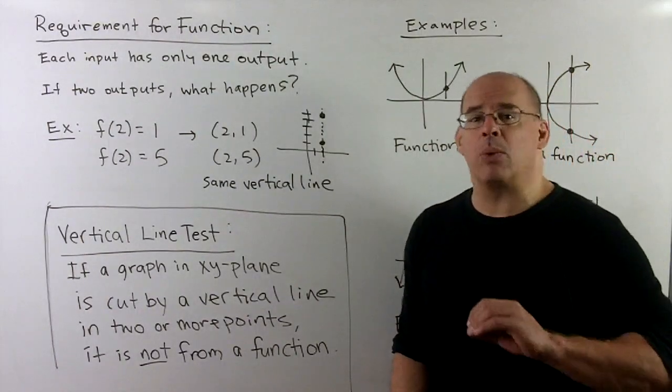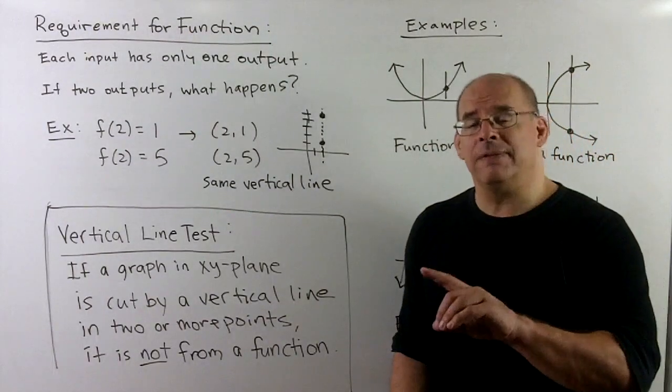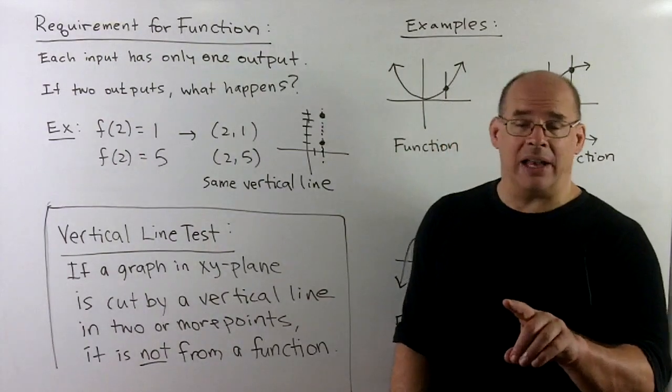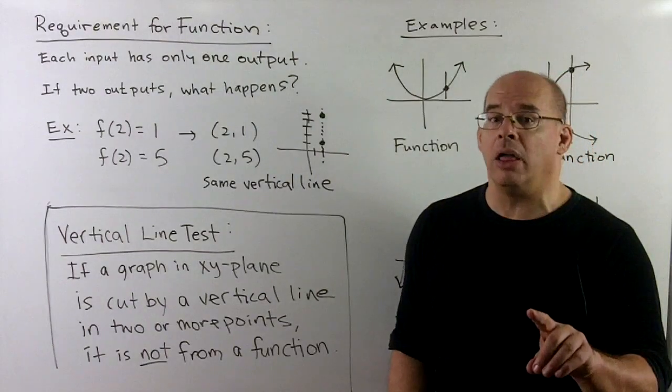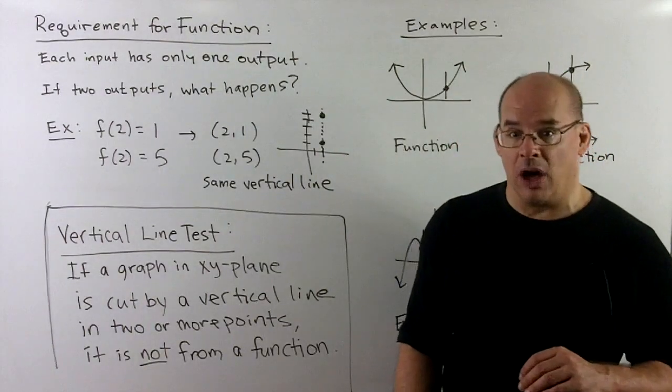We call this the vertical line test. If a graph in the xy plane is cut by a vertical line in two or more points, then that graph does not represent a function. And going backwards is true also. If every vertical line cuts your graph in zero or one point, then that is the graph of a function.